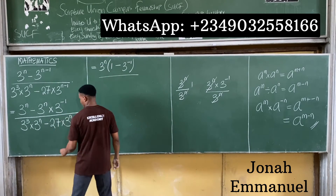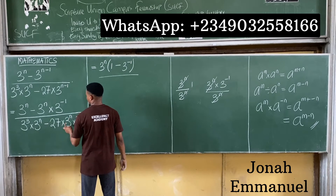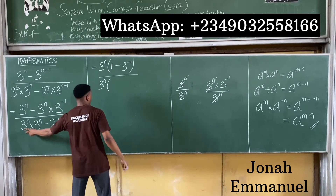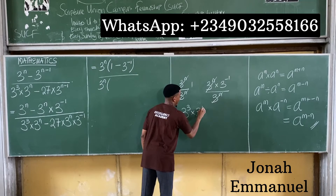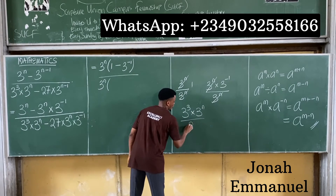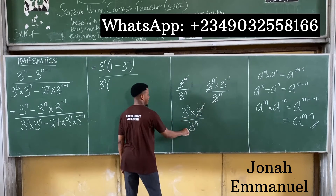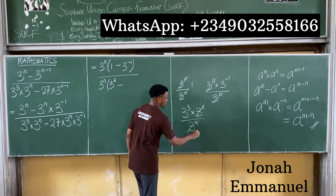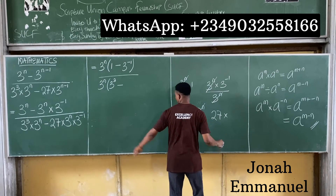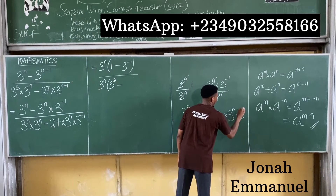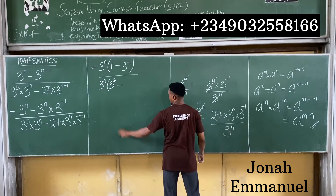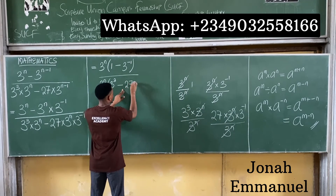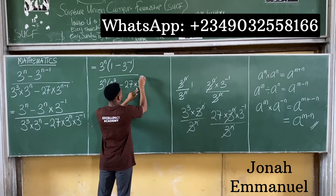In the denominator, factorizing out 3 to the power n: 3 to the power 3 times 3 to the power n divided by 3 to the power n cancels, leaving 3 to the power 3. Then 27 times 3 to the power n times 3 to the power minus 1, divided by 3 to the power n, cancels the 3 to the power n, leaving 27 times 3 to the power minus 1.